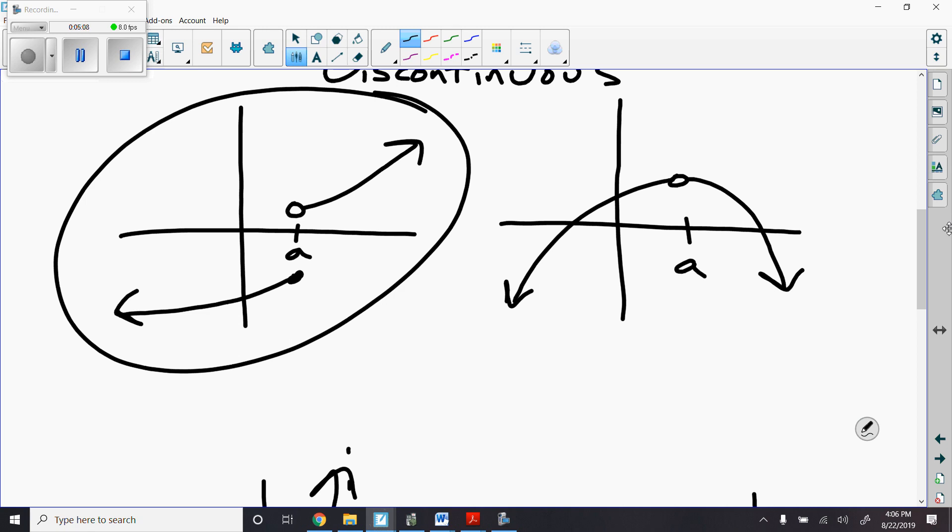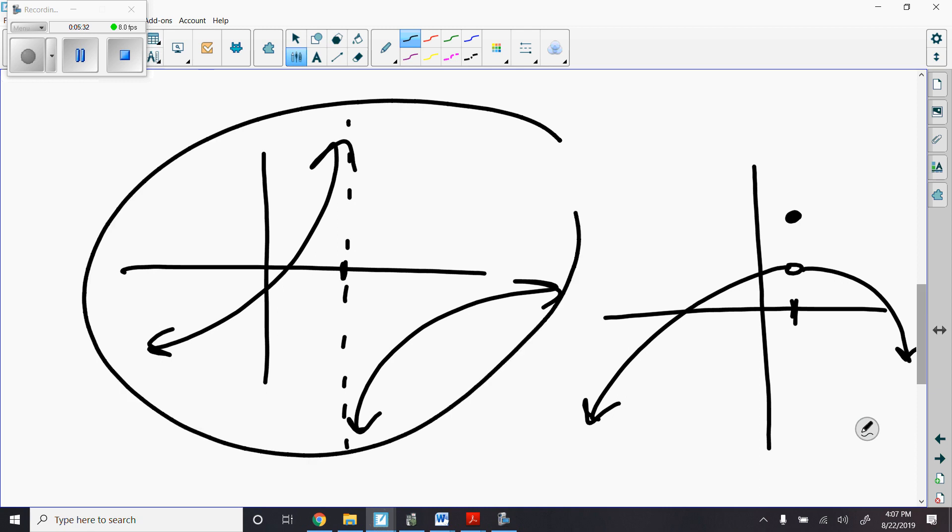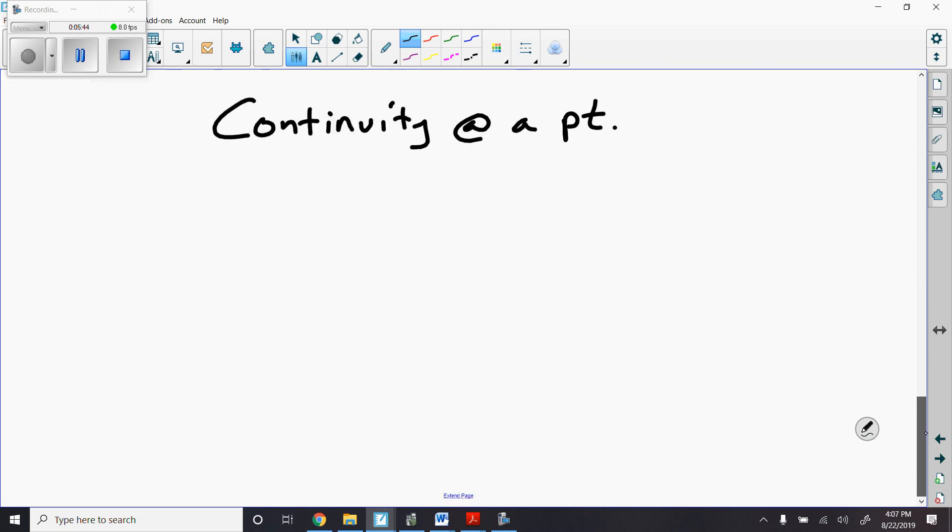How about this second graph? Does the limit exist at A? Well, the answer there is most definitely yes. The right-hand and left-hand limits are the same. But it's still discontinuous. That's not enough just to say, oh, a limit must exist. Anytime a limit exists, the graph is continuous. No, that's not true. We need more than that. So, this graph right here, the limit does not exist because the right-hand limit and the left-hand limit are different. So, our step one is we have to have a limit exist for continuity.